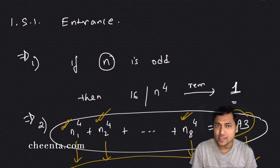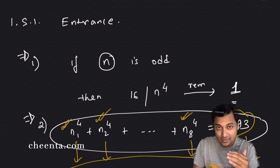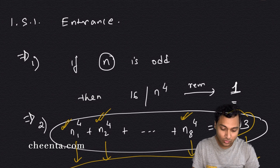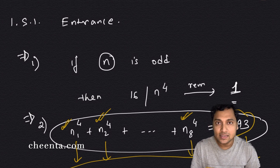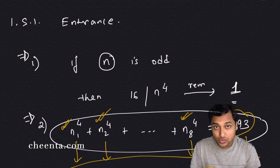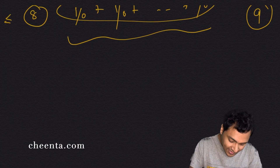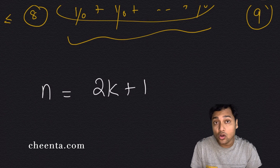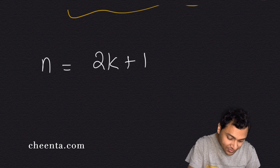All we need to show is that if n is odd, then n raised to the fourth power gives remainder 1 when divided by 16, i.e., n^4 ≡ 1 mod 16. This can be done using modular arithmetic very easily — just check the different cases. But I'll do it in a very elementary manner instead.